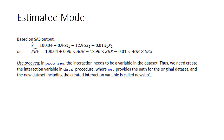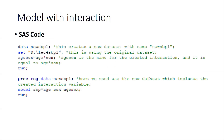The set statement provides the path for the original data — the data without interaction terms. The new data set includes the created interaction variable and is called new_SPB1. The name right after the DATA statement is the new data set being created, and the SET statement specifies the source data used to create it.